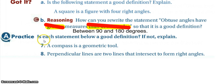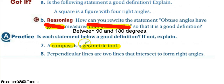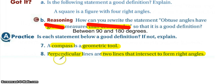For practice problems seven and eight: number seven — 'a compass is a geometric tool' — if we reverse it, 'a geometric tool is a compass' is not always true because a geometric tool could be a straight edge or a protractor, so this is not a good definition. Number eight — 'perpendicular lines are two lines that intersect to form right angles' — reversing it gives 'two lines that intersect to form right angles are perpendicular lines,' which is true. Since the converse holds, this is a good definition, and we can write the bi-conditional: lines are perpendicular if and only if they intersect to form right angles.